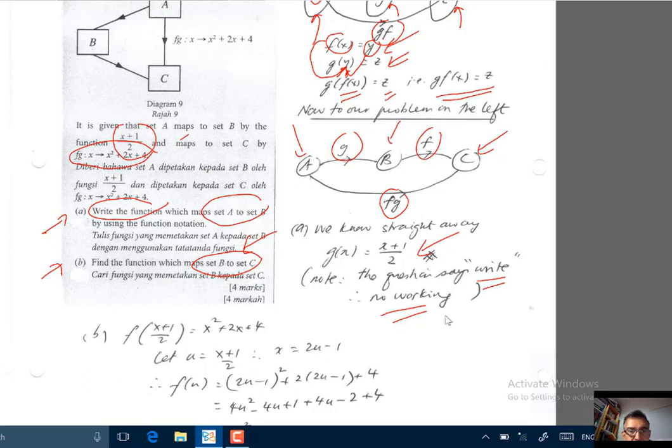And then in part B, we have to find the function which maps set B to set C. So we need to find F. So we know that fg(x) equals x squared plus 2x plus 4.